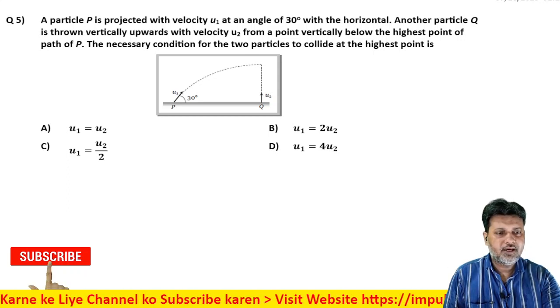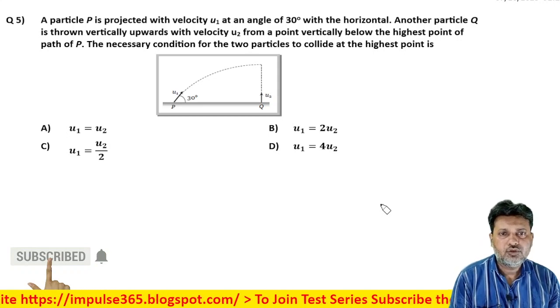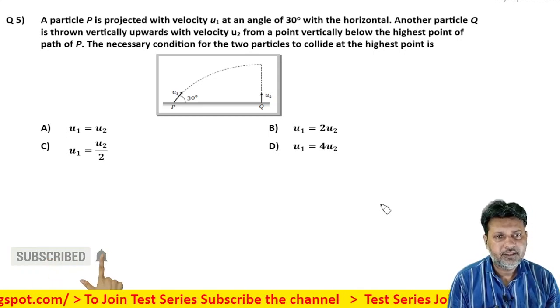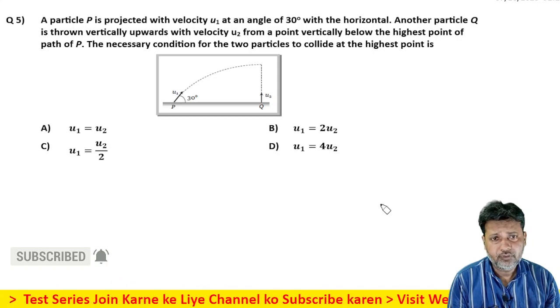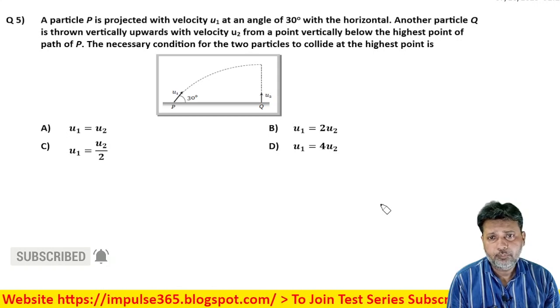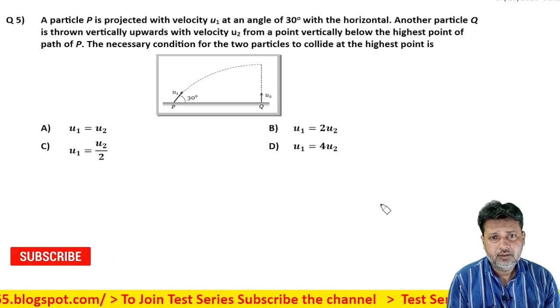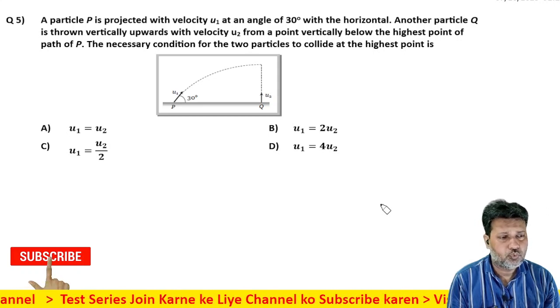Chalo, next question, read. A particle P is projected with velocity U1 at an angle 30 degree with the horizontal and the particle Q is thrown vertically upward with velocity U2 from a point vertically below the highest point of the path of P. The necessary condition for the two particles to collide at the highest point is.